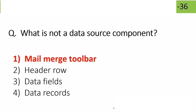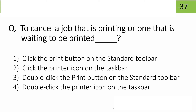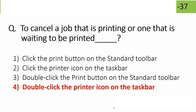A print job that is waiting to be printed — how do you cancel it? The correct answer is option 4: double-click on the printer icon on the taskbar — double-clicking the printer icon on the taskbar allows you to cancel the print job.